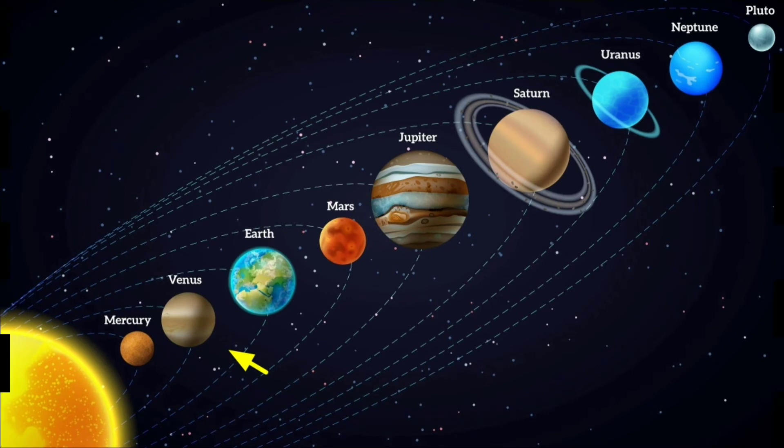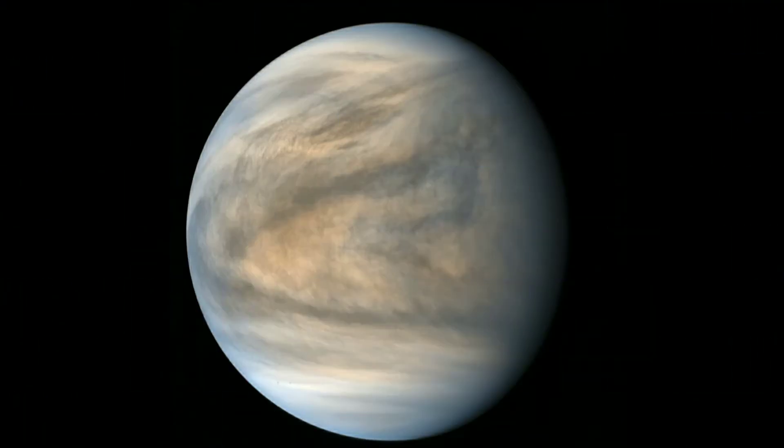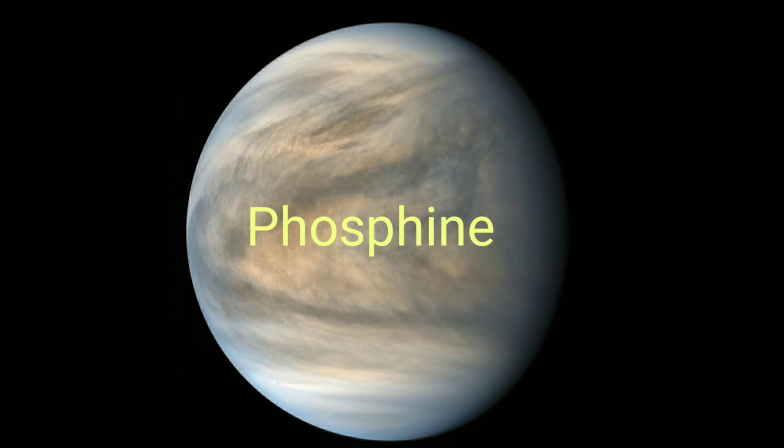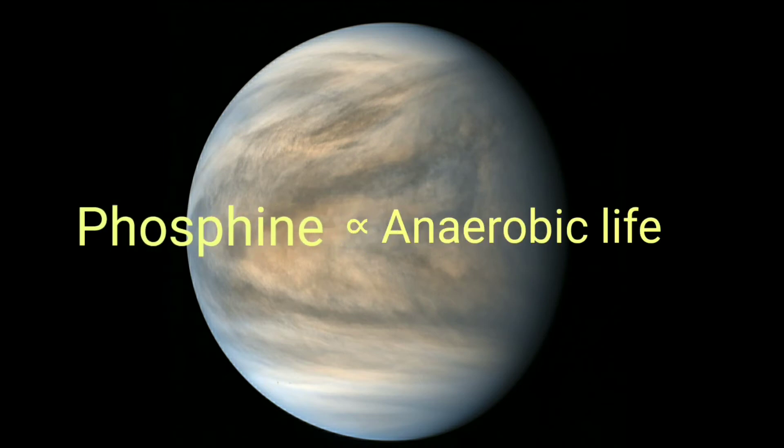Whenever scientists find a habitable place outside Earth, they search for some molecules that are associated with life. Phosphine is one of them. And phosphine is not only associated with life, it also cannot be produced without anaerobic life. So, it is actually a big sign of life.